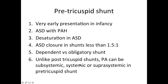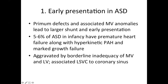Coming to specific lesions — pre-tricuspid shunts. I divide pre-tricuspid shunt questions into 6 categories. The first category is very early presentation in infancy. What is early presentation in ASD? Obviously primum defects and associated mitral valve anomalies like mitral cleft with mitral regurgitation will result in larger shunts and can cause early presentation. In secundum ASDs, 5-6% can have premature heart failure with hyperkinetic PAH and marked growth failure, especially aggravated in borderline inadequacy of the mitral valve and left ventricle, particularly in infants with LSVC draining into a dilated coronary sinus.